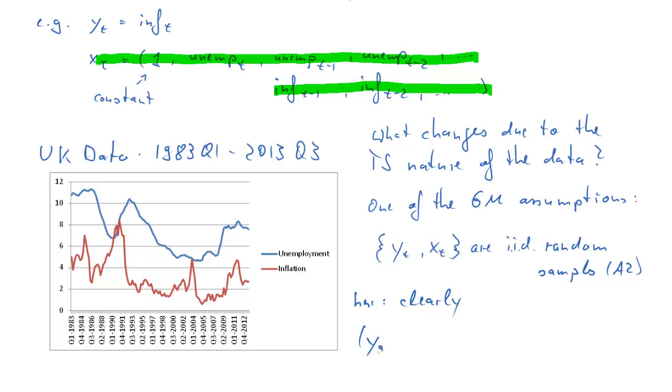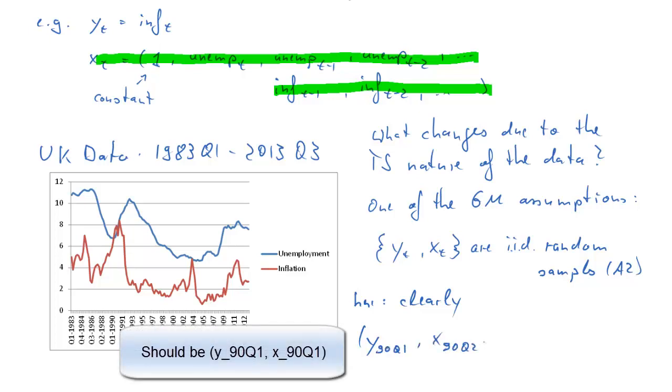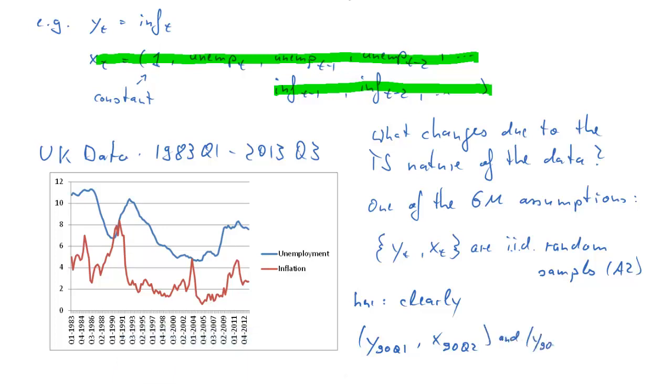As if you look at y for, let's say, 1990 quarter 1 and x 1990 quarter 1, and the next sample, y at 90 quarter 2 and x at 90 quarter 2, these are clearly related to each other, so they're clearly not iid random samples. So that assumption doesn't hold, and it's basically unlikely to hold for most time series data.